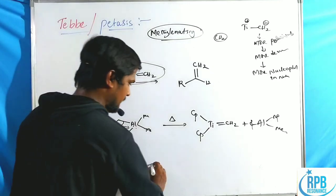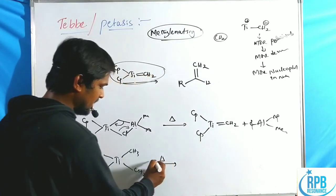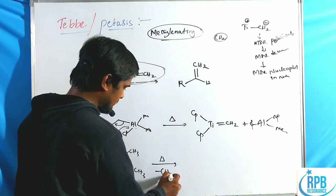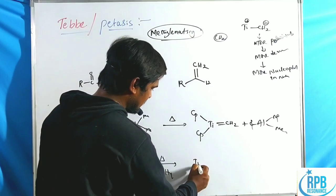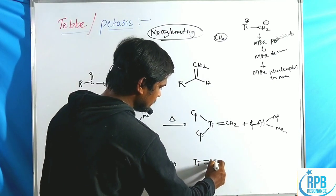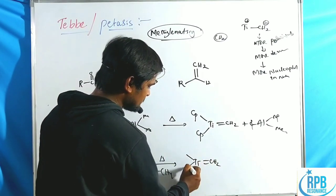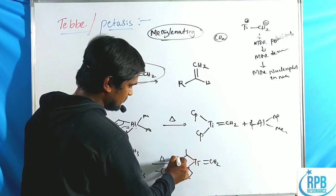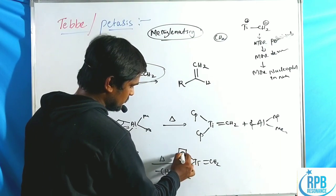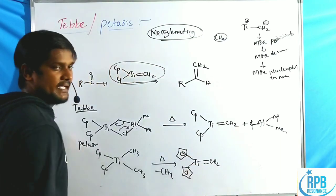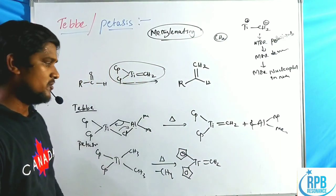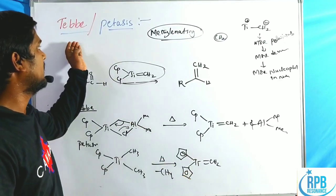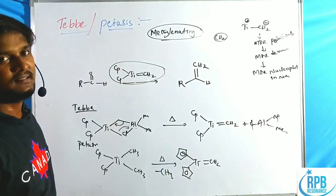In the Petasis preparation, dimethyl titanocene (Cp₂Ti(CH₃)₂) is used. Upon heating, methane is eliminated, yielding the corresponding Cp₂Ti=CH₂ alkylidene complex — the same titanium alkylidene complex as in the Tebbe method.